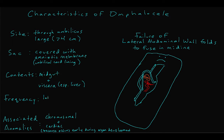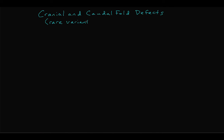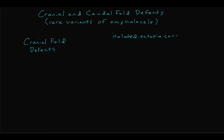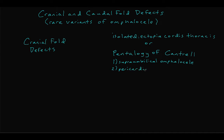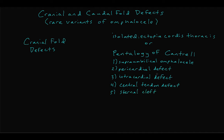Lateral abdominal wall fold defects are relatively common, but rarely infants will present with defects in fusion of the cranial and caudal folds. An abnormality in normal cranial folding can cause an isolated defect where the heart does not fold into its normal position inside the mediastinum — a condition known as ectopia cordis thoracis — or it can be part of a syndrome known as the pentalogy of Cantrell. The five components of this pentalogy are superumbilical omphalocele, pericardial defect (meaning the heart is in the omphalocele sac), intracardiac defect, a defect in the central tendon of the diaphragm, and a sternal cleft. A defect in the caudal fold can cause an infraumbilical omphalocele with associated cloacal exstrophy.